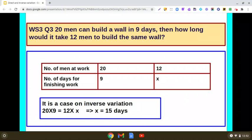Work done by men and number of days for finishing the work. We will be making a table. In the first row we will write down number of men at work, and in the second row number of days for finishing the work.